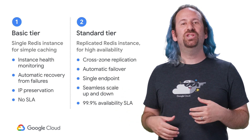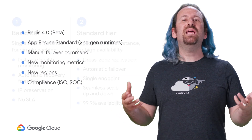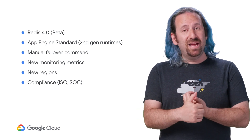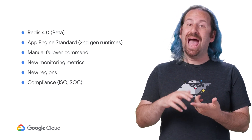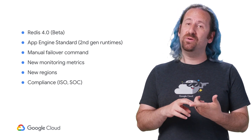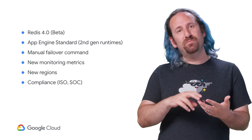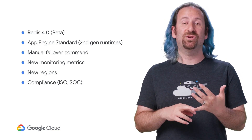Since the GA launched six months ago, many updates have been added to Memorystore, including manual failover for testing, access from App Engine second generation runtimes, more regions, metrics, and some compliance certifications.